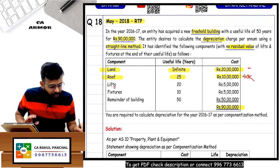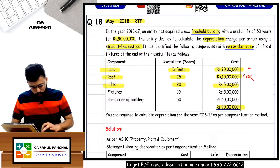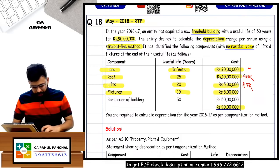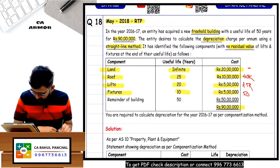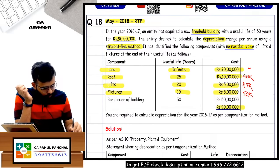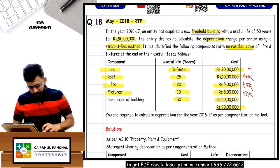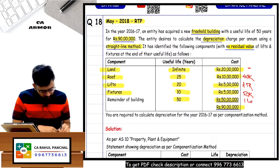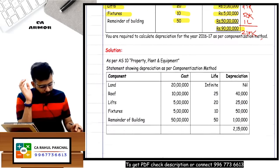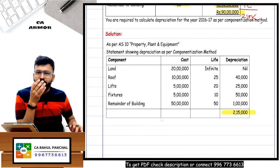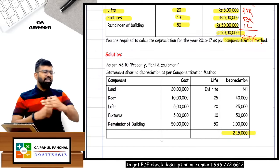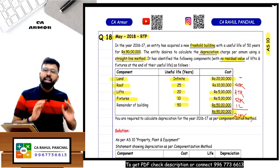Fixtures: 5 lakh cost, 10 years life - 5 lakh divided by 10 = 50,000. Remainder of the building: 50 lakh cost, 50 years life - 50 lakh divided by 50 = 1 lakh. Total depreciation: 40,000 + 25,000 + 50,000 + 1 lakh = 2,15,000. This is how component-wise depreciation works as per AS10, Property Plant and Equipment.